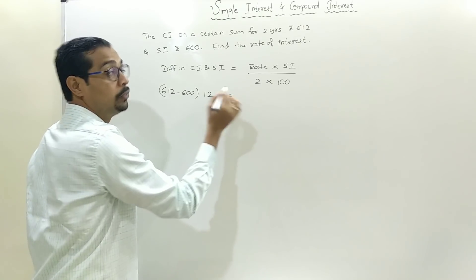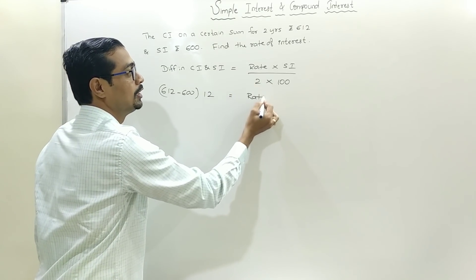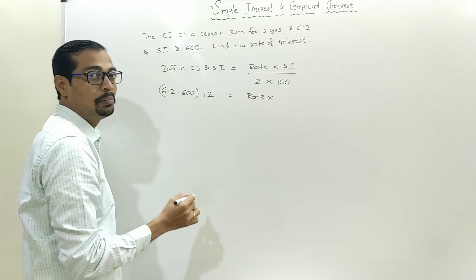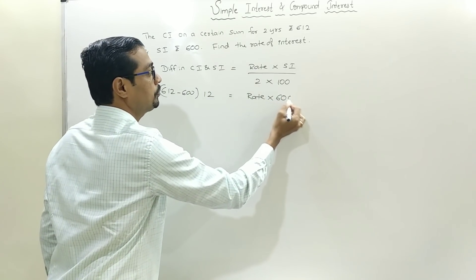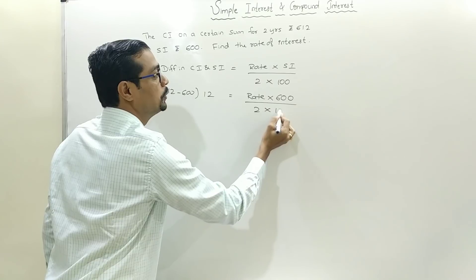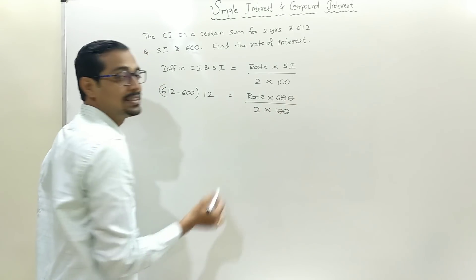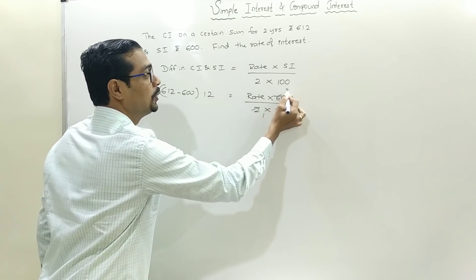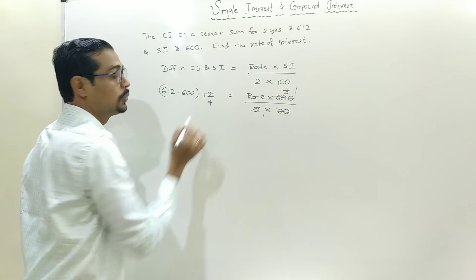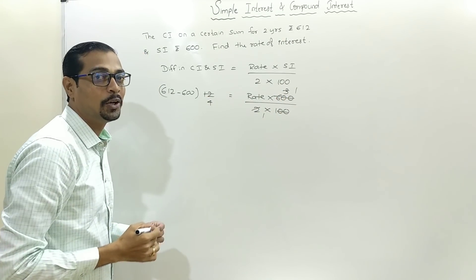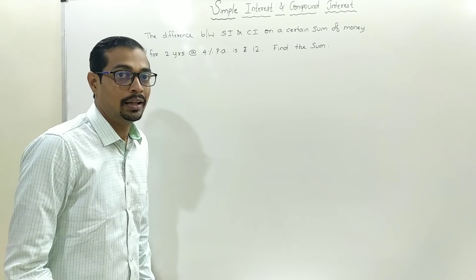We have to calculate rate. We already know simple interest is 600, and 2 into 100 equals 200. Cancelling zeros: 12 divided by 600 multiplied by 200. Working through: 2 ones are 2, 3 ones are 3, 3 ones are 3, 4s are — therefore, rate of interest is 4%.